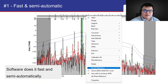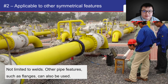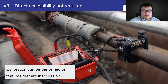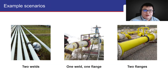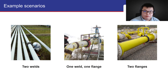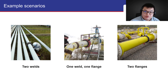Absolute calibration is fast and semi-automatic. It can be performed by clicking on the reference features and clicking on reverb reference. Aside from welds, we can also calibrate the deck on other symmetrical features like flanges, which is useful in scenarios such as flanged pipe sections. The reference features used for calibration do not need to be physically accessible, which is useful in cases such as insulated, road crossing, or buried pipes. There are three common scenarios: welds on each side of the ring, a weld on one side and a flange on the other, or flanges on each side.